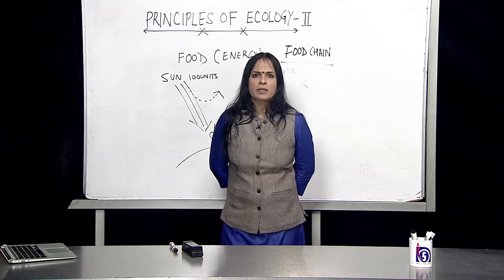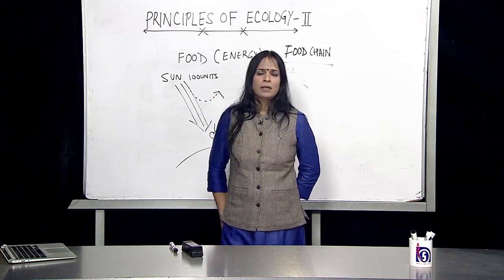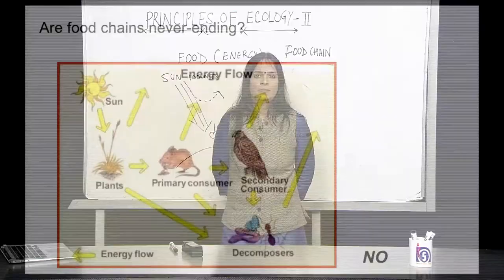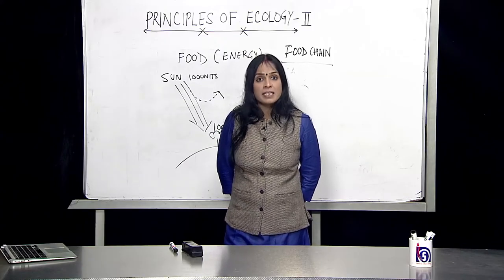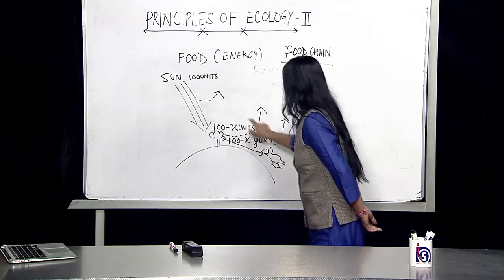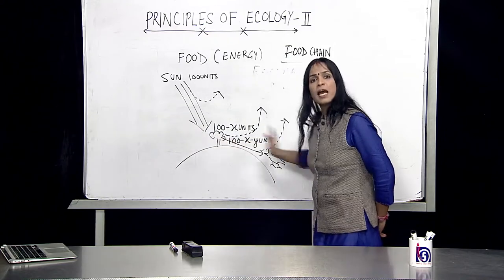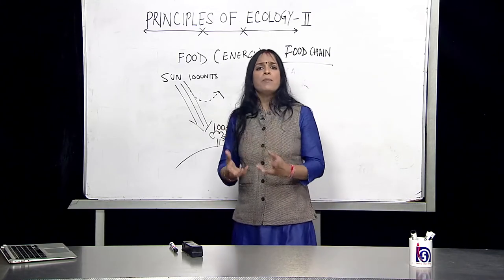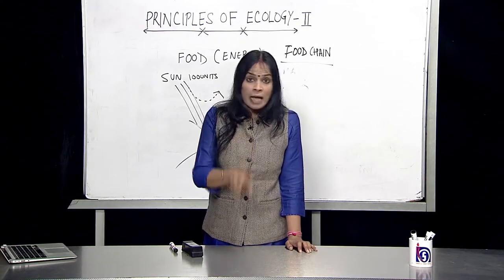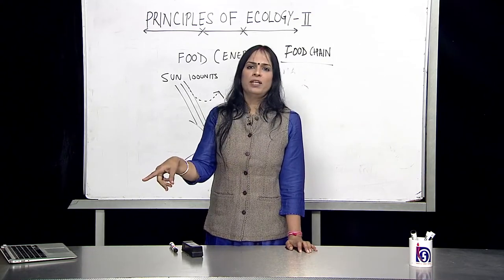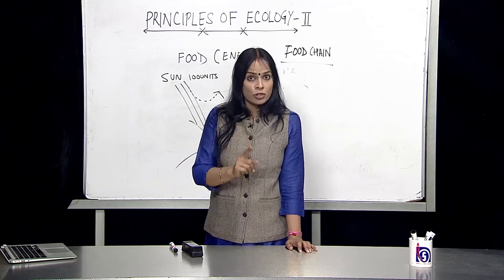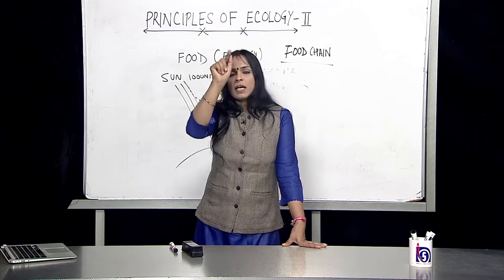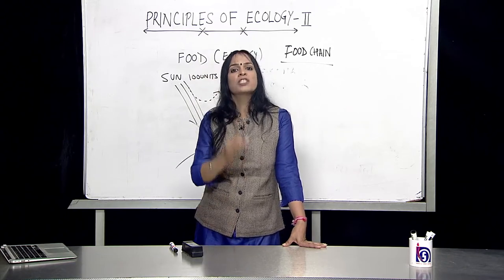A practical question: can the food chain go on indefinitely? Can a tertiary consumer be eaten by the next level? No. At every step energy is getting wasted. Ultimately at some point so little energy is left in the food chain that that organism can no longer become food for another one — and that's where the food chain ends. Food chains end because energy flows and every time it flows some amount is lost.